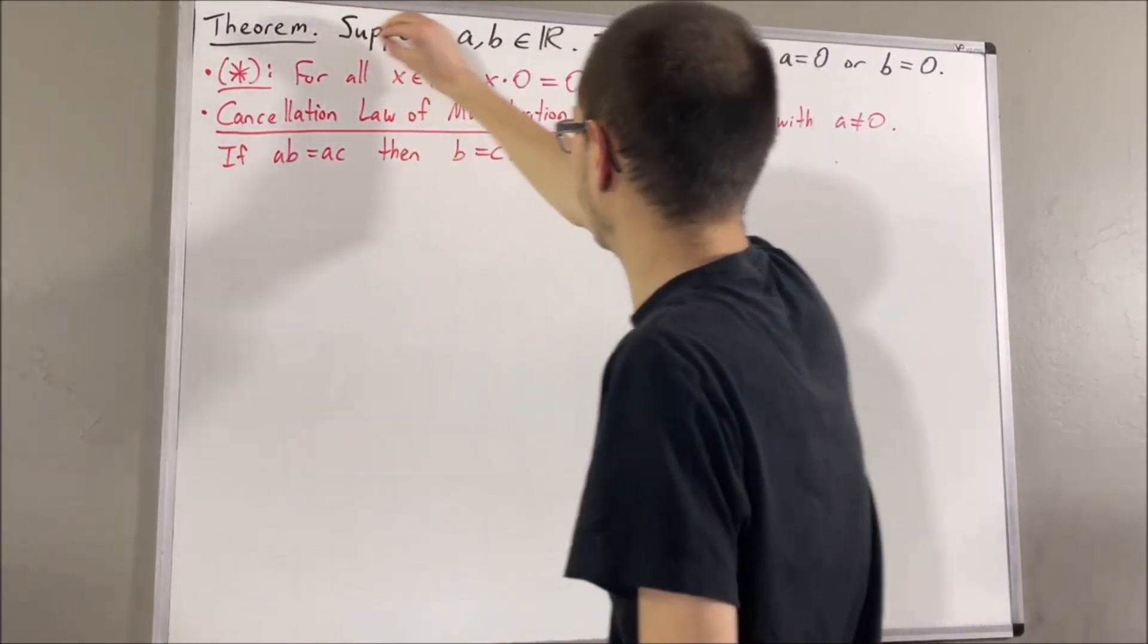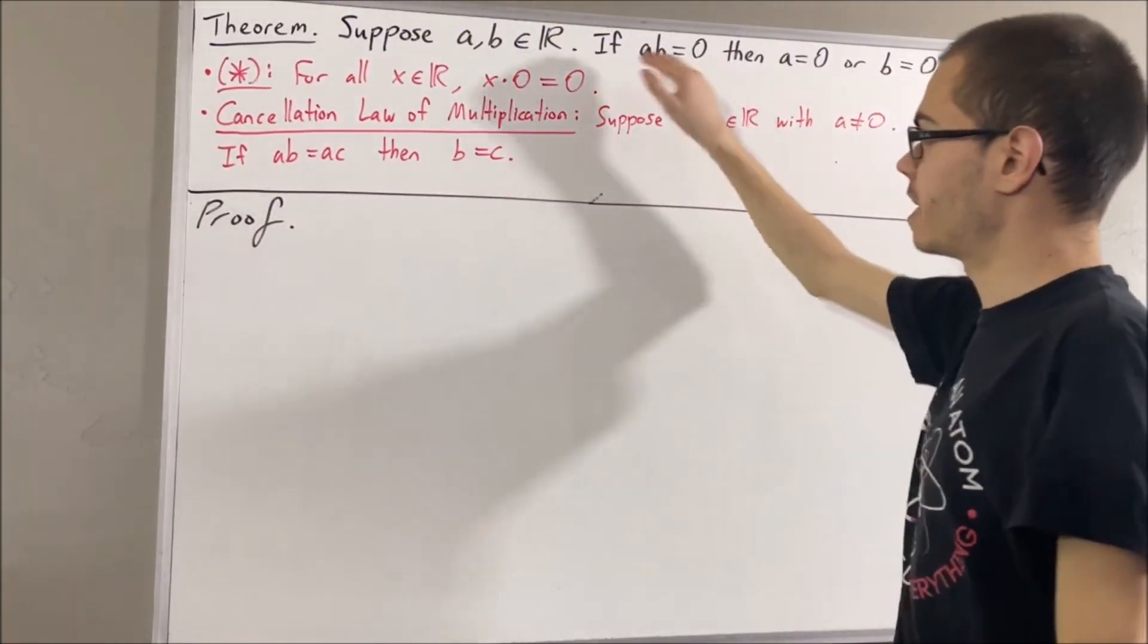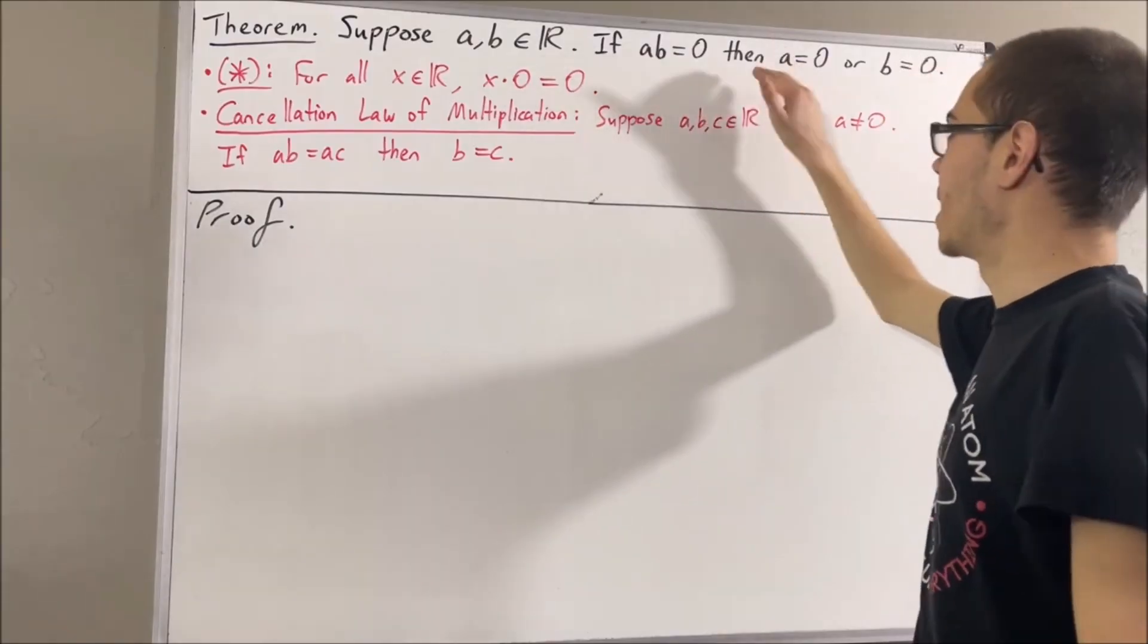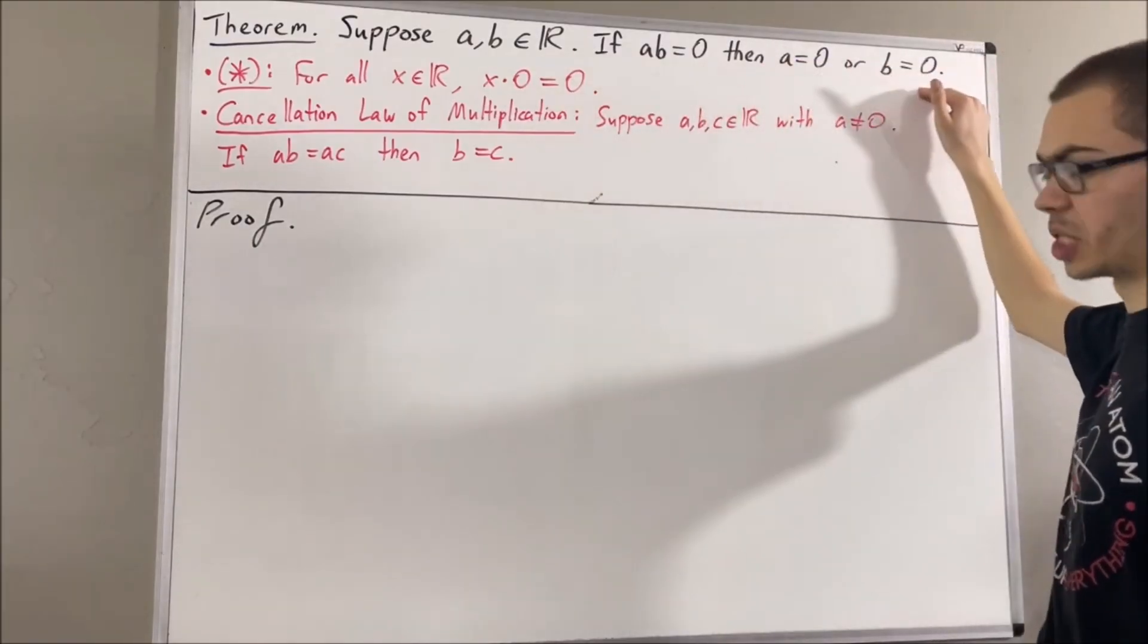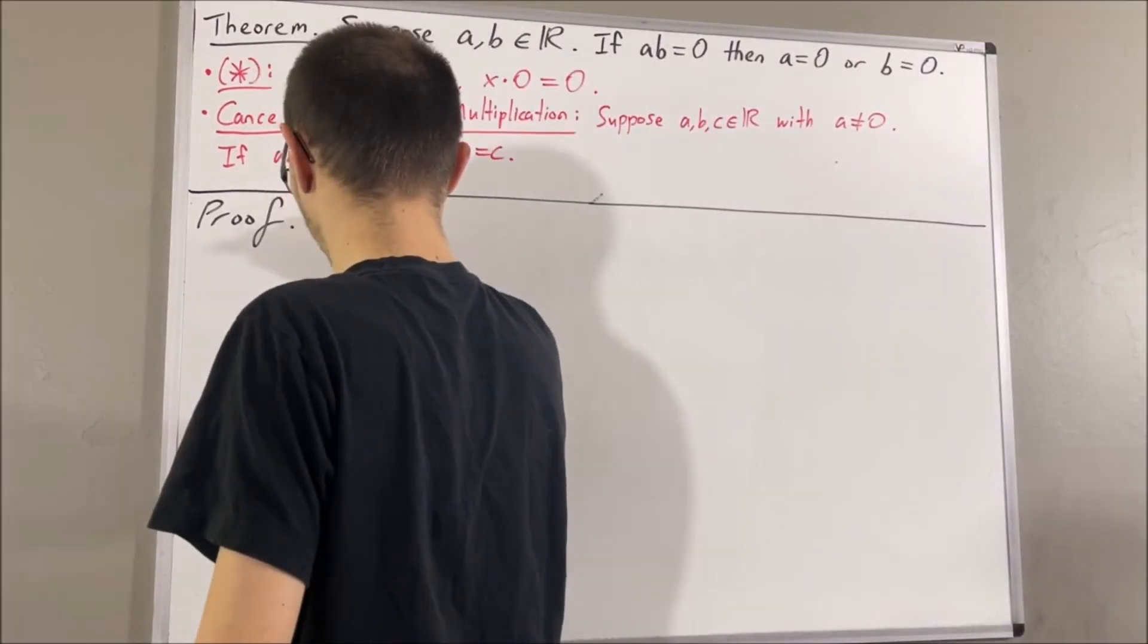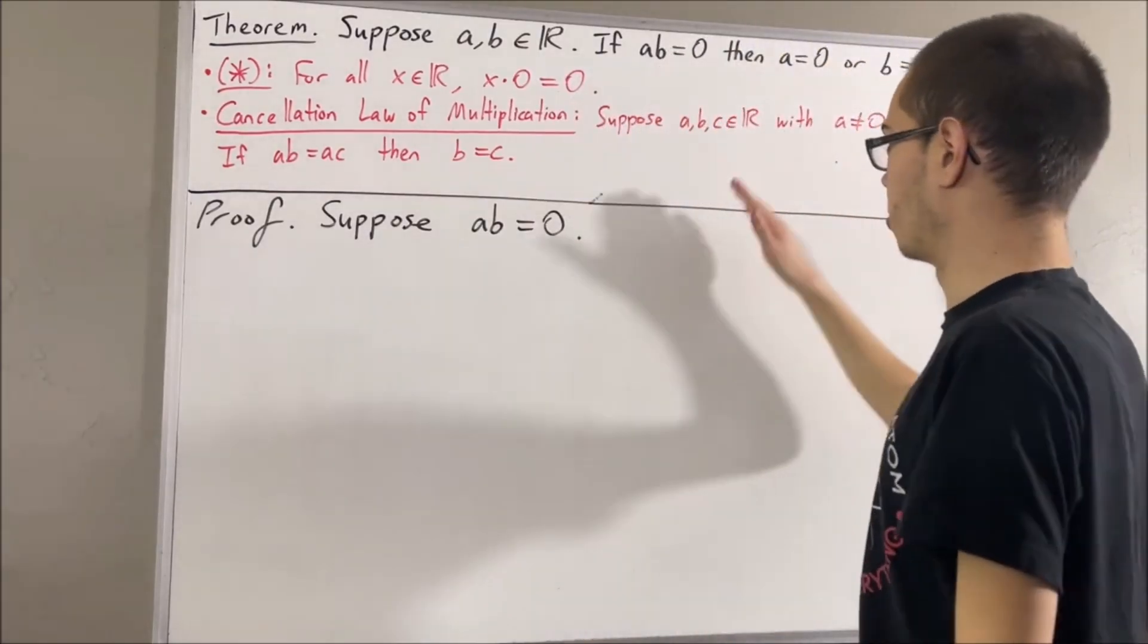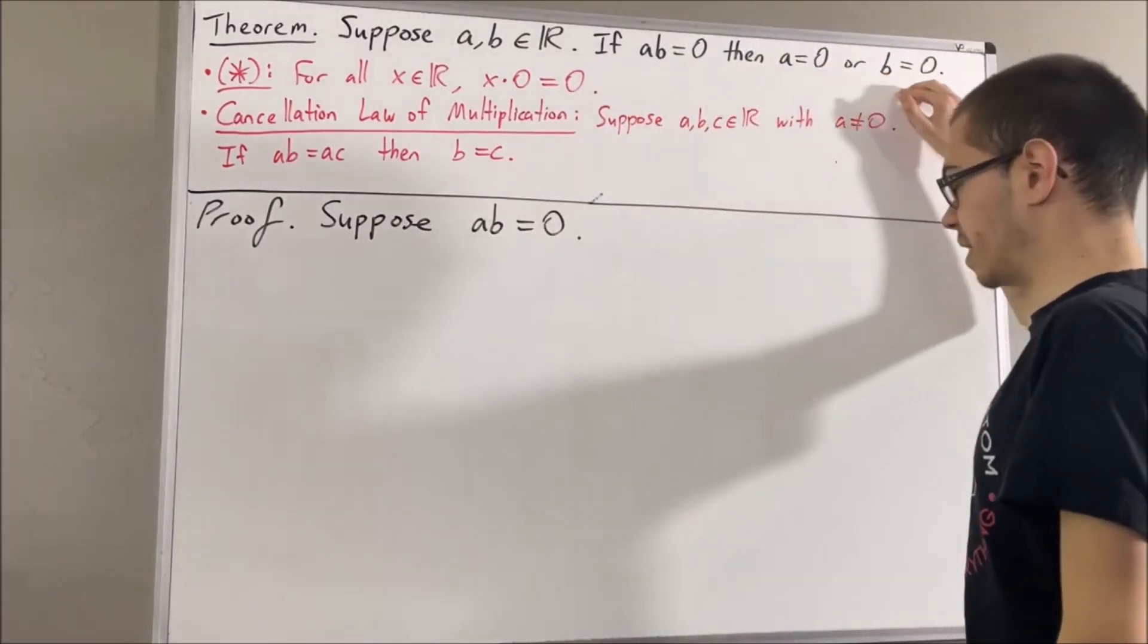Okay, so now let's get into proving this theorem. We're trying to prove if AB is equal to 0, then A is equal to 0 or B is equal to 0. And to prove that, let's suppose AB is equal to 0. From here, the whole goal is to show that A is equal to 0 or B is equal to 0.